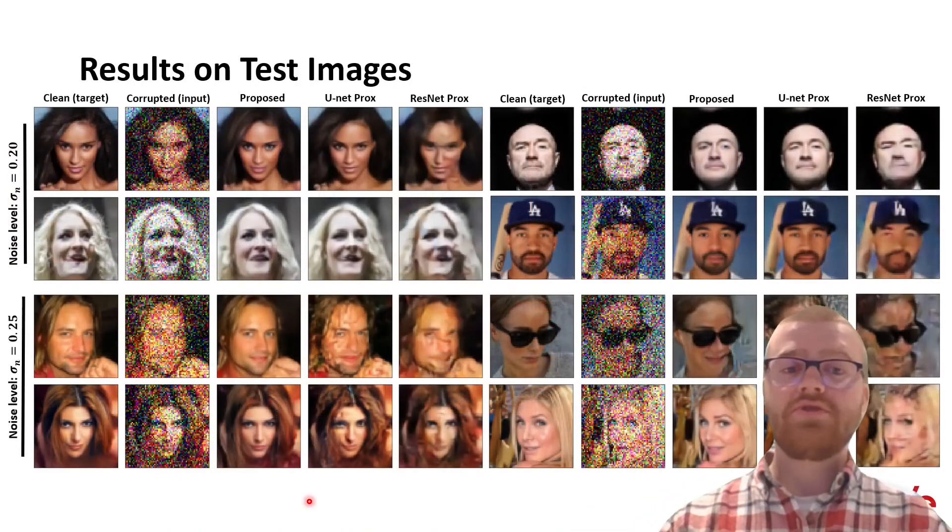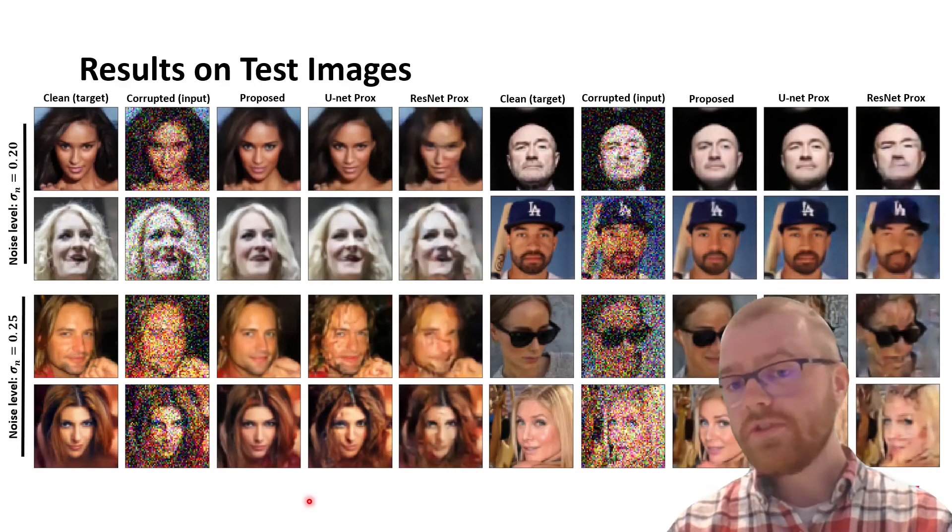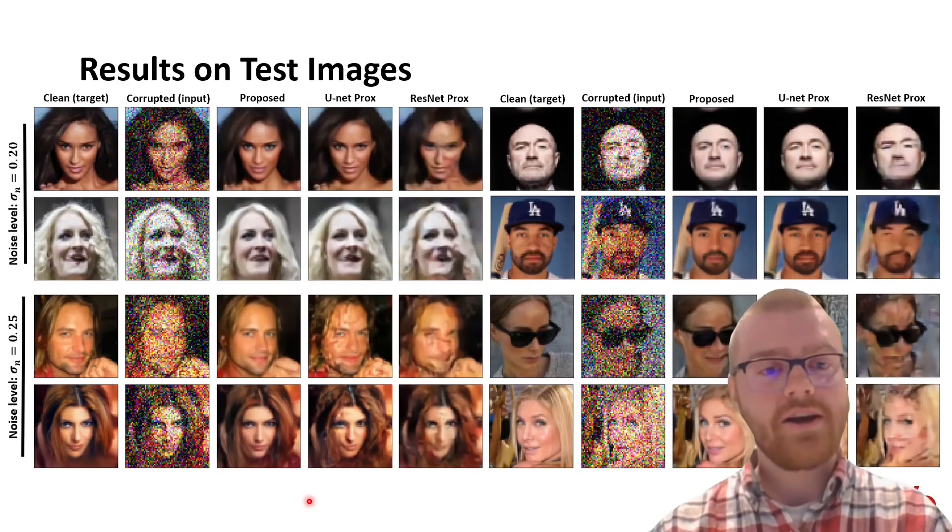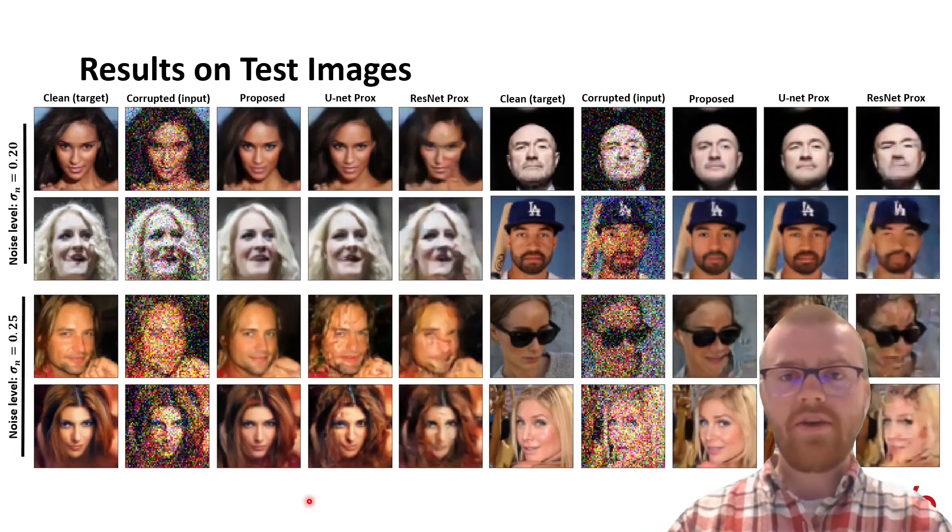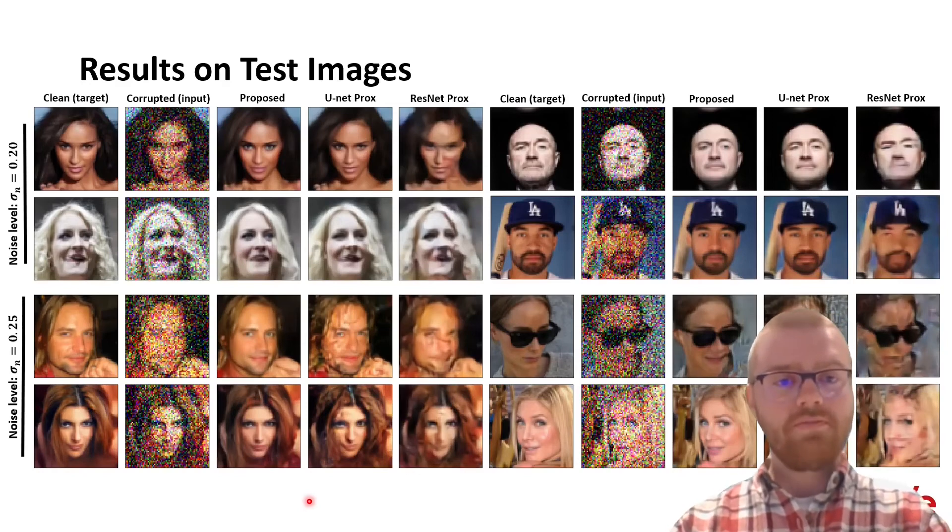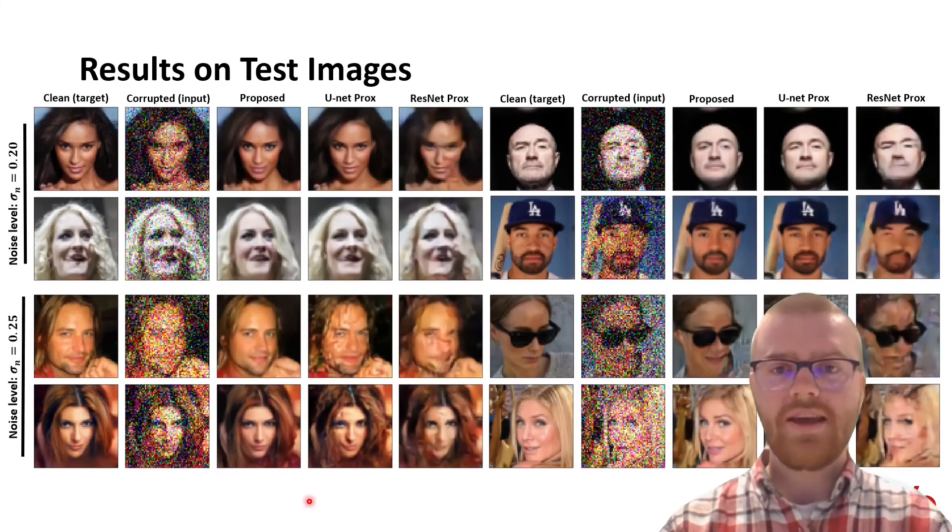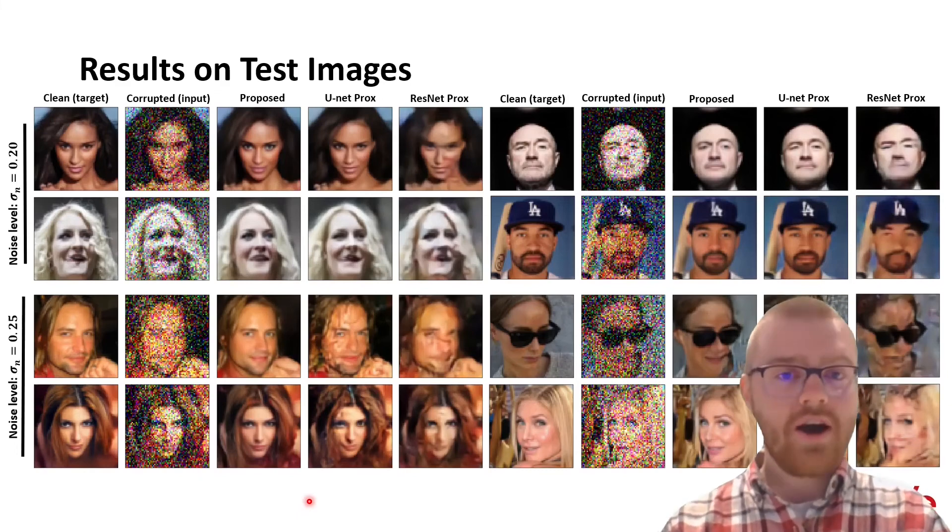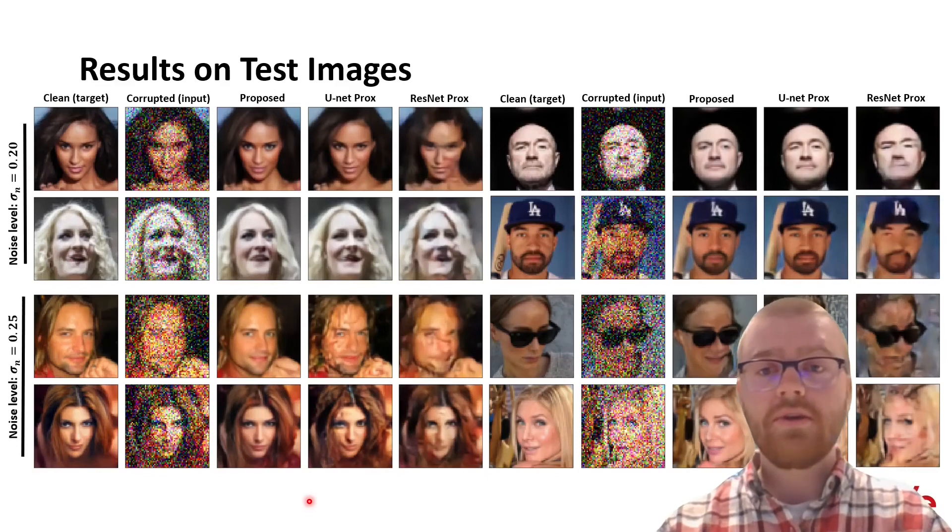We are not restricted to inpainting. We can, of course, also do denoising, what our paper for ICASSP is actually showing. We have here a denoising, and what we can see, we have compared our proposed flow proximal operator with a UNET and also a RESNET. And on top here, we've got a noise level of sigma 0.2, and then we can see that all of these networks are indeed able to denoise this image.